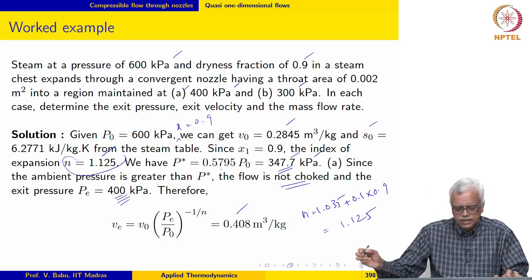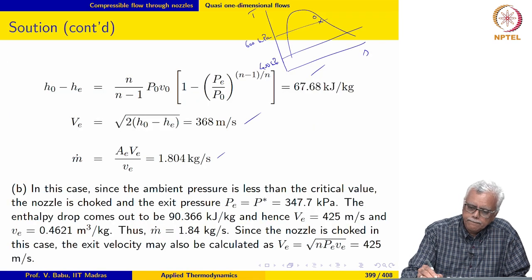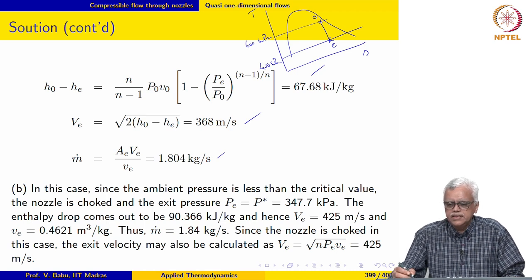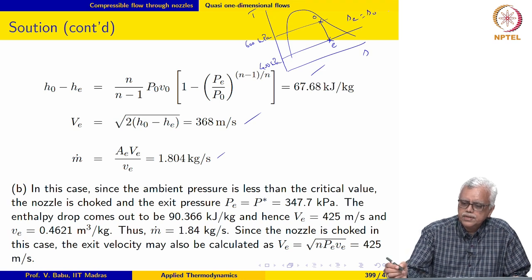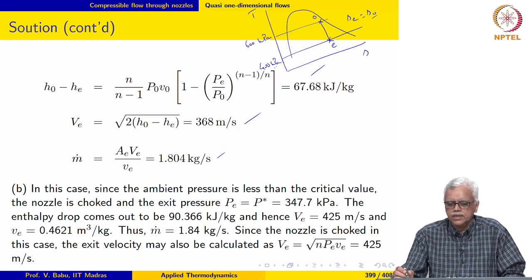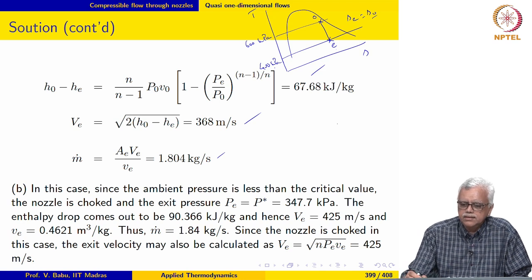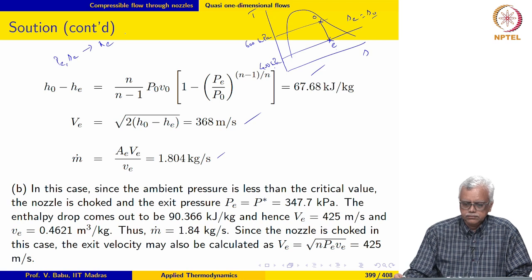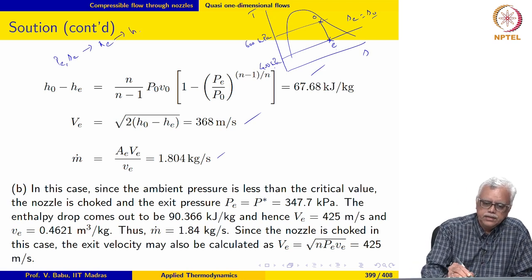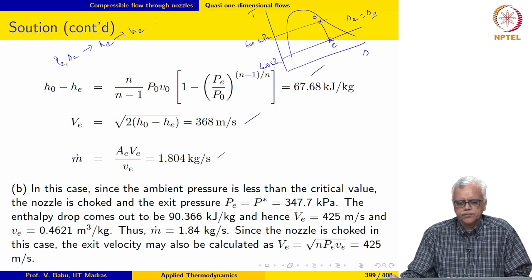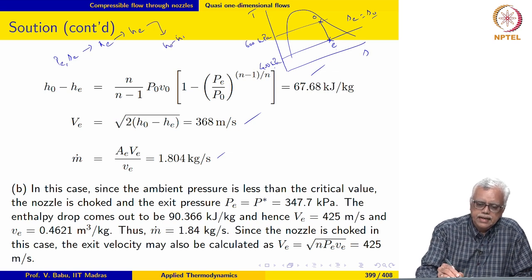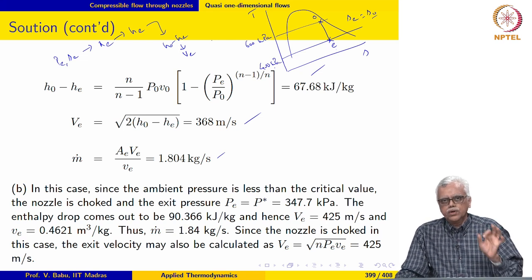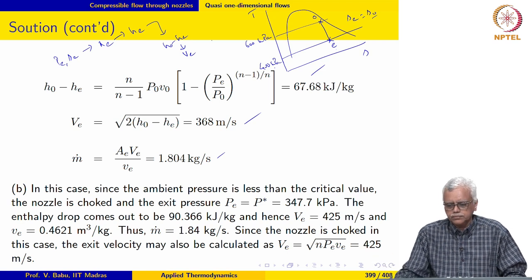Once we determine that pₑ = 400 kPa, the steam undergoes isentropic expansion to exit state E at 400 kPa. Since Sₑ = S₀ and the pressure is known, the dryness fraction at exit may be evaluated. With the pair of properties (pₑ, Sₑ), we determine Xₑ, Hₑ, and Vₑ, from which the enthalpy drop and exit velocity are computed. For calculating p* alone, we require the value of n.